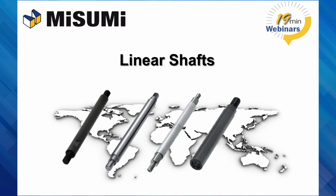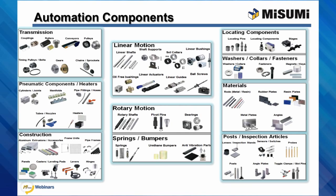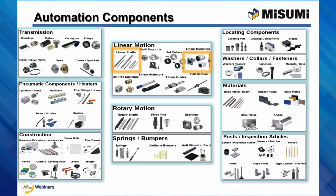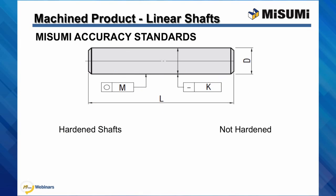Hi, my name is Johan from the engineering department at MisumiUSA. In this session, I will be focusing on Misumi's linear shafts. One of Misumi's key product offerings are shafts and rods that differ in price point and tolerances for their different applications. Misumi linear shafts are typically used in conjunction with our linear bushings that ride along the length of the shaft. The dimension accuracy of the linear shaft is very important because it ensures that the linear bushing is accurately sliding along.